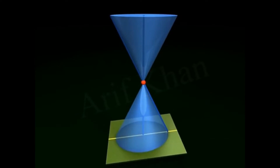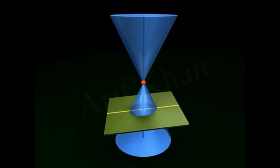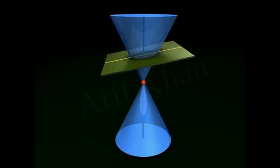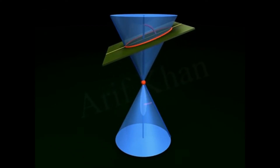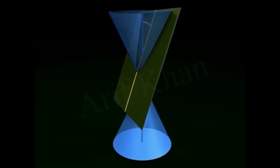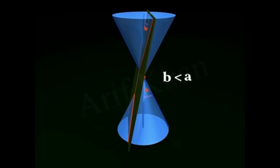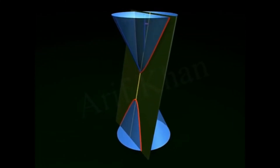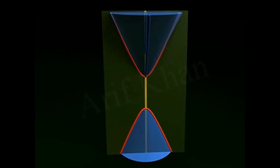Hyperbola: The plane intersects only one nappe of the double-right circular cone as long as the angle between the plane and the vertical axis is greater than or equal to the vertex angle. However, if the plane intersects the vertical axis at an angle smaller than the vertex angle, the plane intersects both nappes of the cone to form an open curve called a hyperbola, which has two disjoint curves.